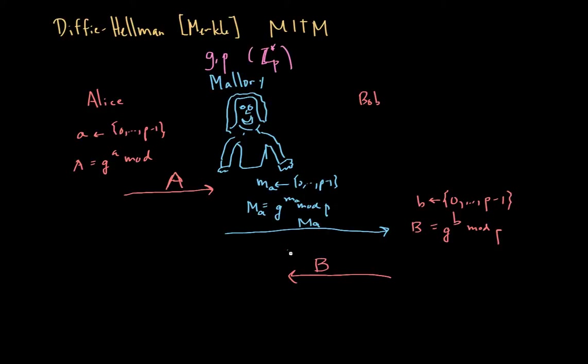And then when she saw Bob's message back to Alice, let's say she did the same thing, and she computed a lowercase m_b from 0 to P minus 1, and she computed uppercase M_b as G to the m_b mod P, and let's say she sent this M_b to Alice.